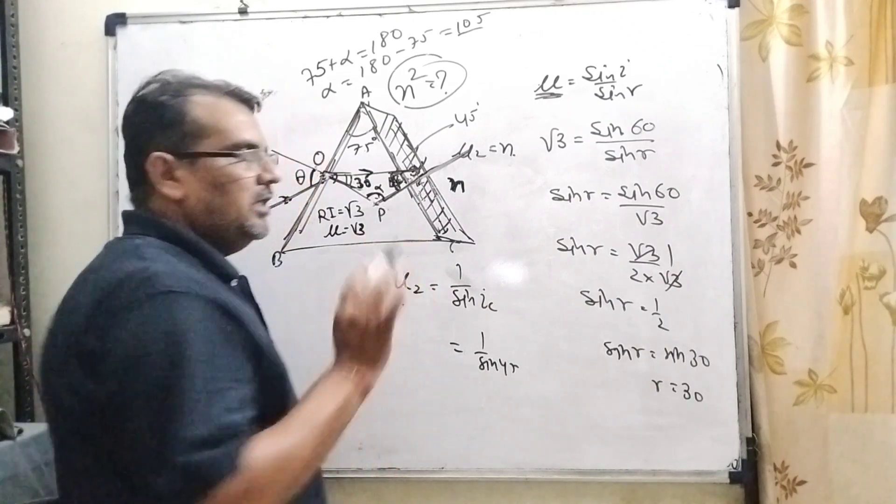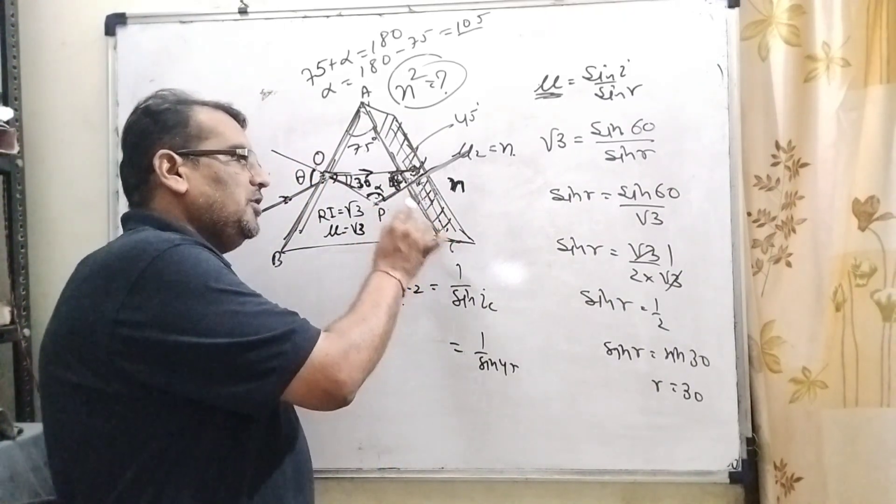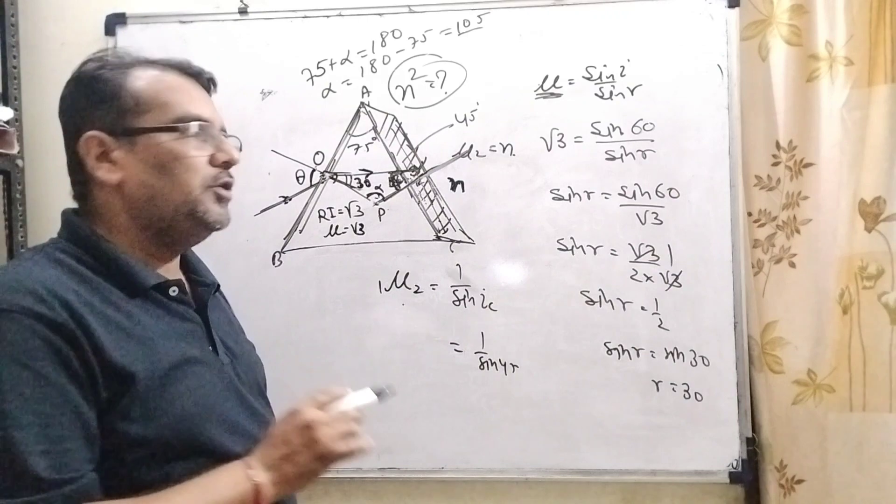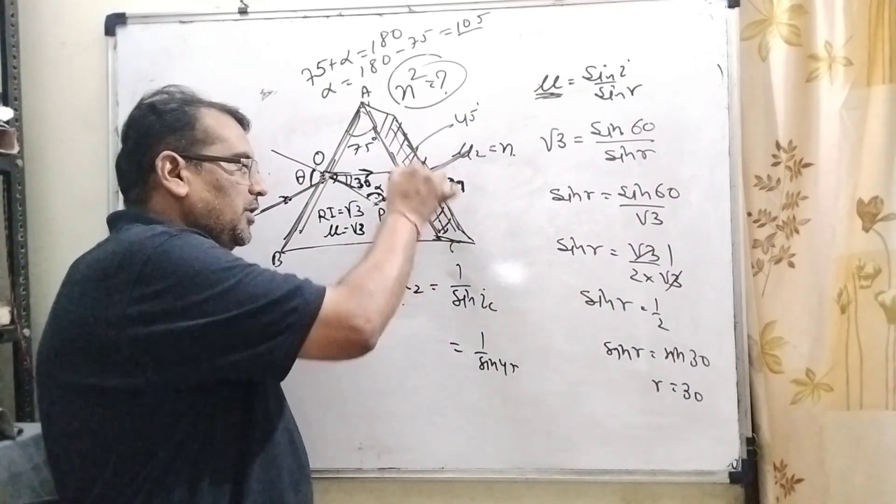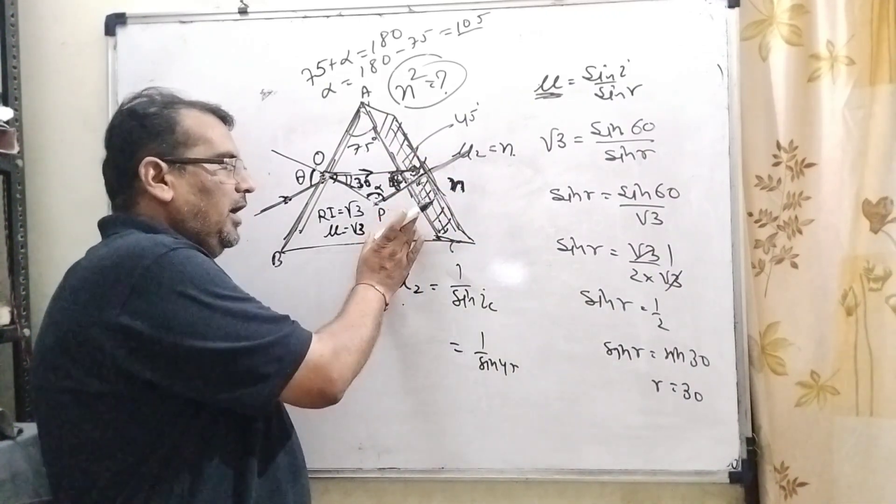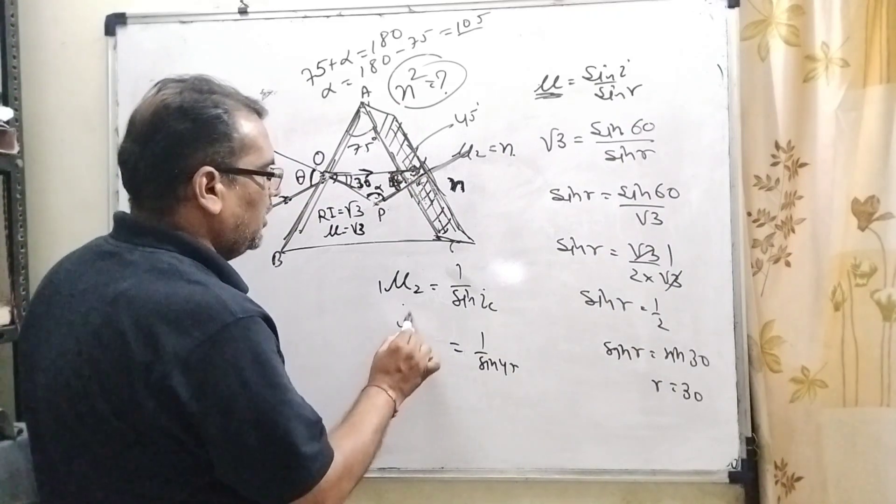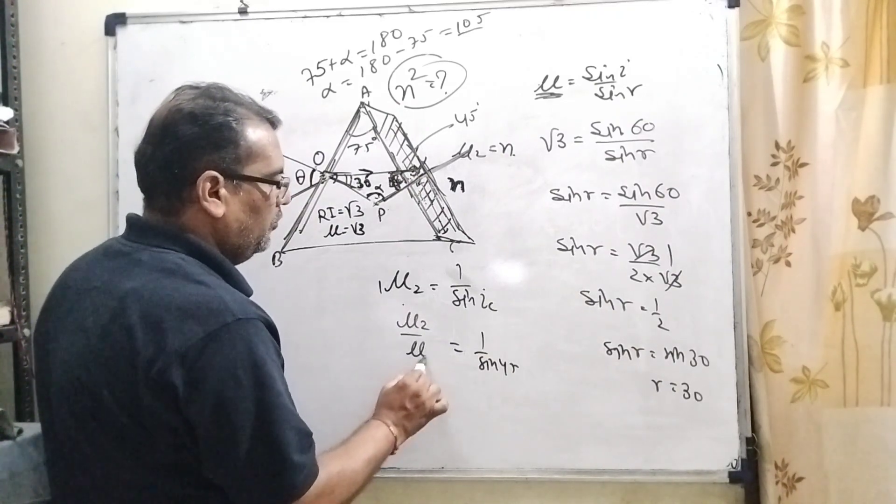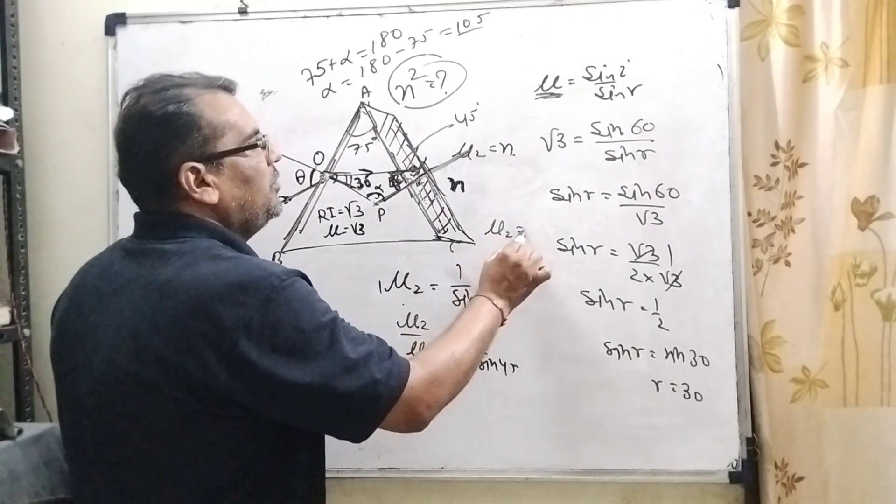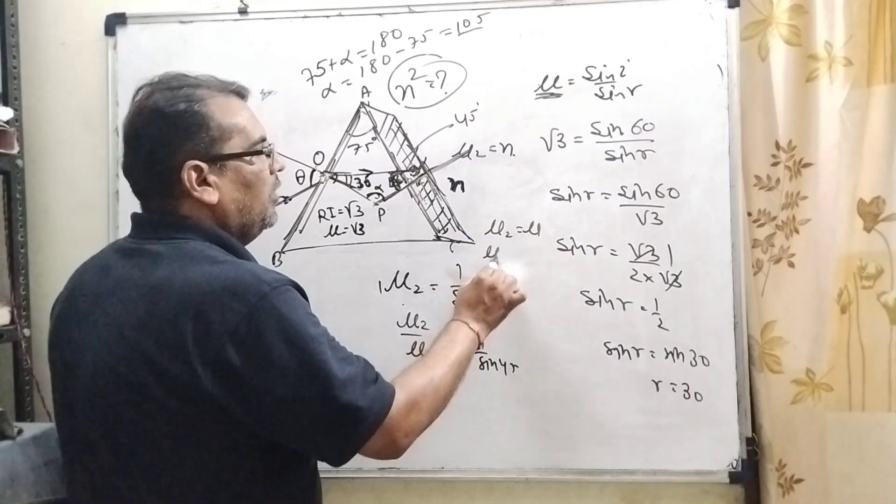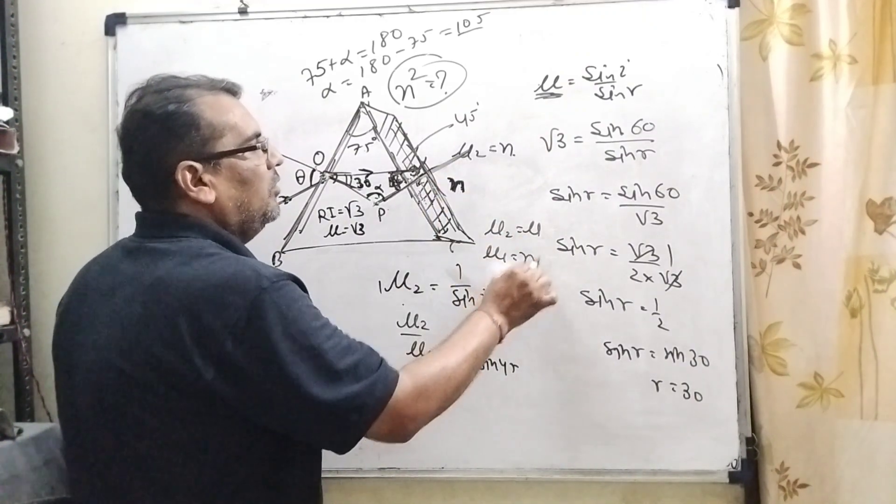You know that this phenomena of total internal reflection occurs from denser to rarer. It means this portion n is rarer medium and this is denser medium. So here mu 2 upon mu 1. Here mu 2 is mu and mu 1 is rarer medium, means n.